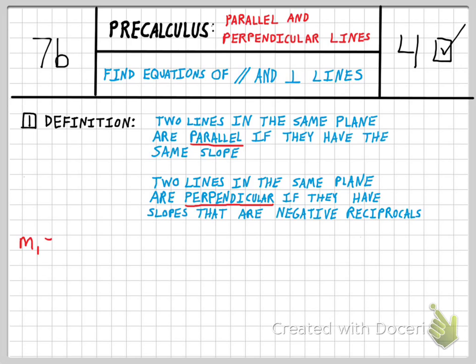if I have one line whose slope is, let's say, 2, then I find the negative reciprocal of that by reciprocating my number and taking the opposite sign. So the negative reciprocal would be negative 1 half. A second example, if I had one line and the slope was negative 3 fifths, then the negative reciprocal of that would be a positive 5 thirds.